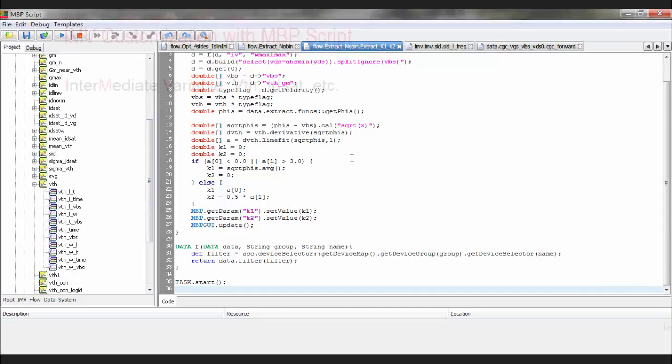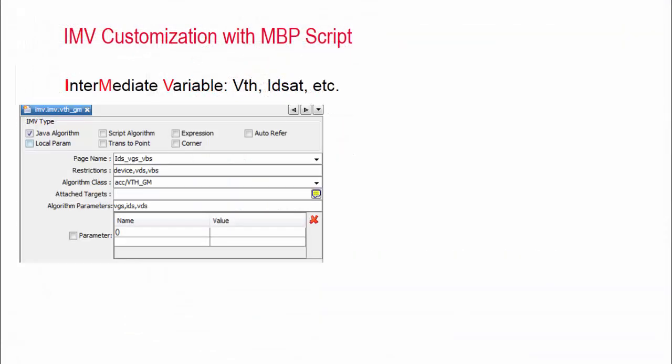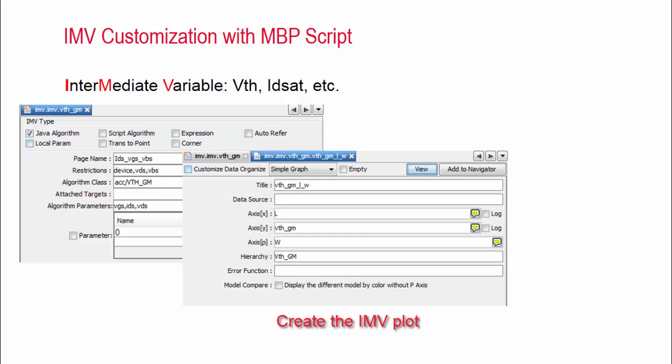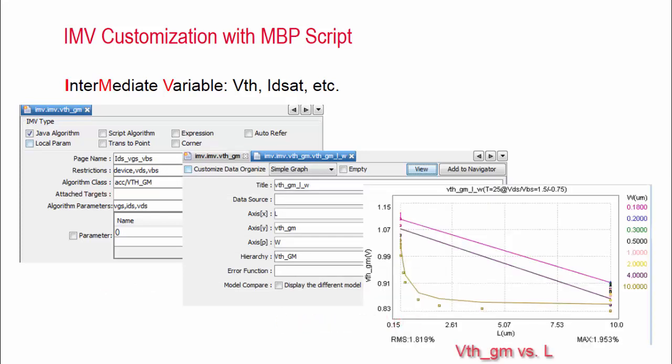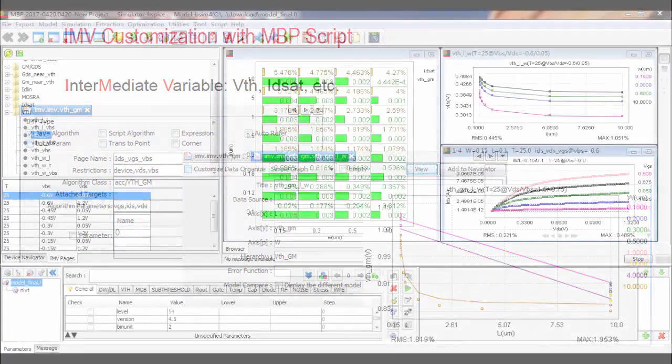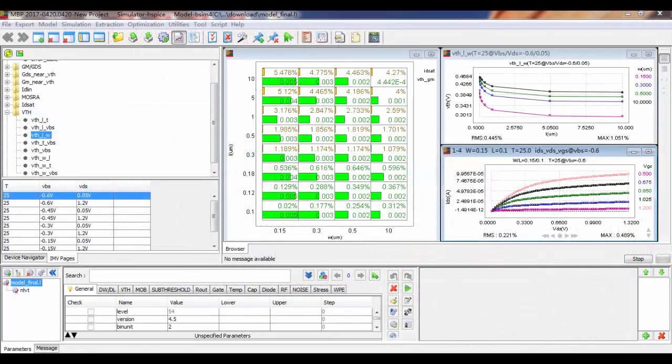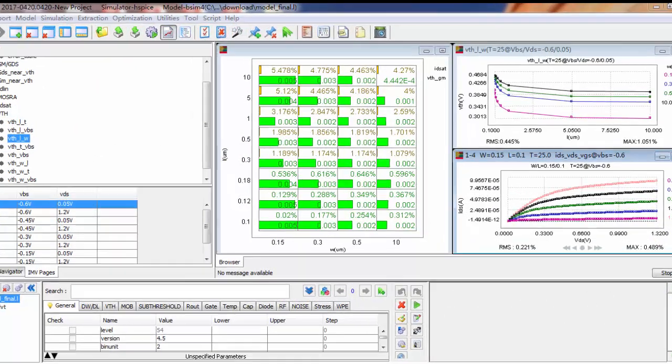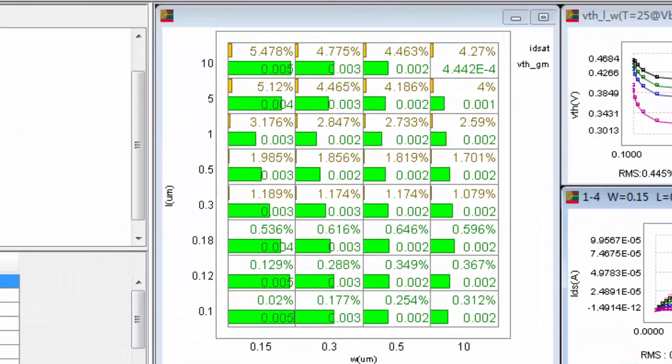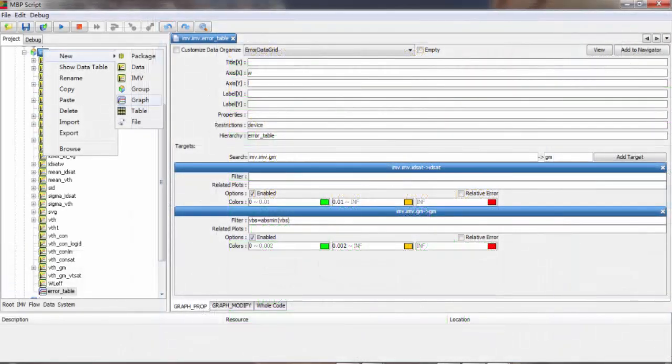For example, I first create an IMV named VTH-GM. Once the IMV is defined, I continue to create its IMV plots. For example, VTH versus L as shown here. In addition, an error table plot can be created with script to check fitting accuracy in a global view. We will provide this script for you to download in the end of the video.